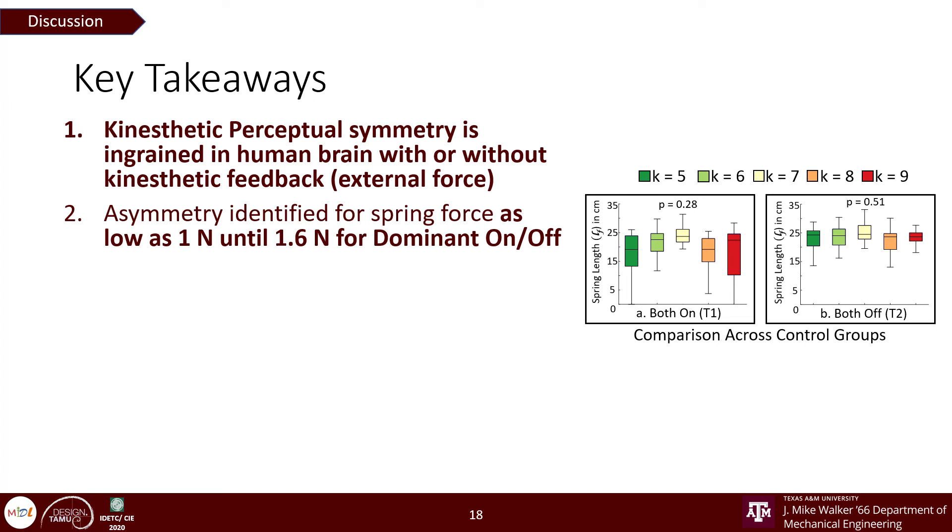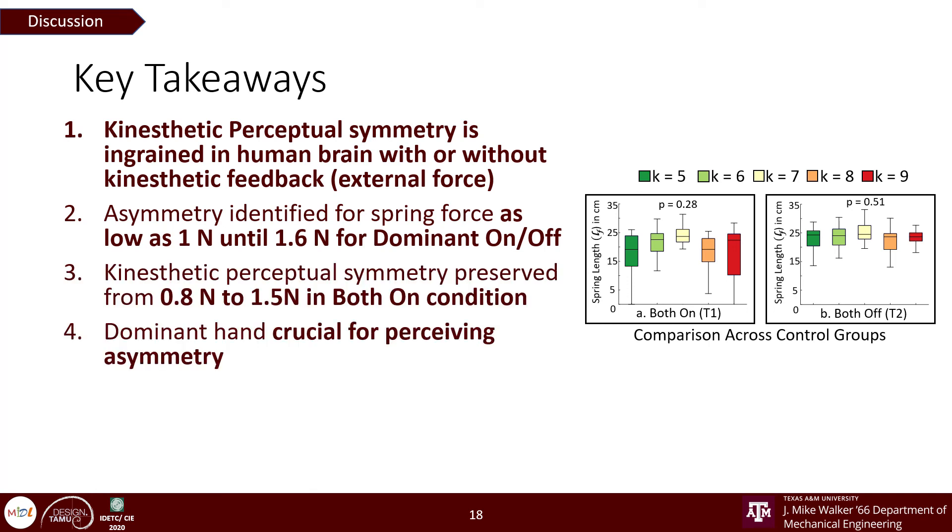On the contrary, for when forces on both hands were active, perceptual symmetry is actually preserved for average forces between 0.8 to 1.5 N. We also observed that the dominant hand was deemed crucial by the participants to perceive asymmetry in forces, but it also ended up creating false positives for higher stiffness range in both on condition, making the user falsely perceive asymmetry in the force feedback.